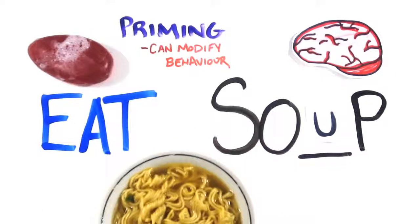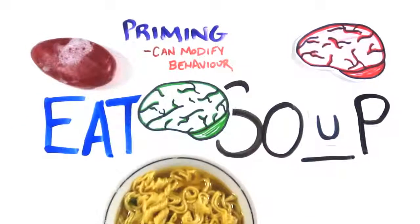Though System 2 likes to think that it's in charge and knows what's going on, the truth is that priming effects have even been shown to affect and modify behaviour. These arise in System 1 and you have no conscious access to them.